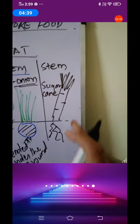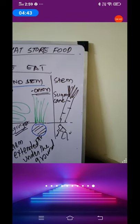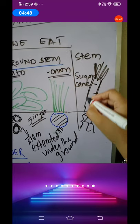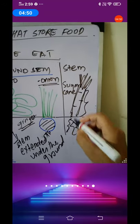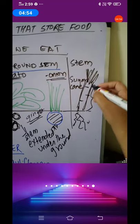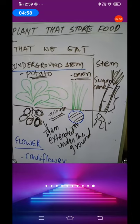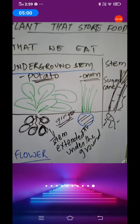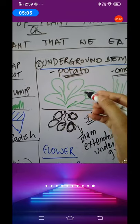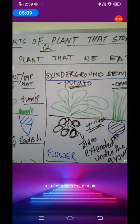What about the general stem? Stem is the part found above ground. Sometimes we eat the stem itself — for example, sugarcane. This portion is grown above the ground and we eat it. So it's not necessary that only underground stems can be eaten; sometimes above-ground stems can also be eaten. Underground stems are called underground stems because they are extensions of the stem themselves.